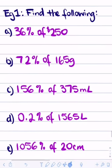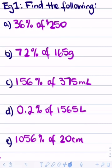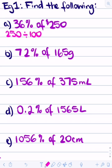Let's start by doing a few questions. If you think you know how to do it, pause the video and try it yourself and we'll go through the answers. The first question: what is 36% of $250? Using the unitary method, that's 250 divided by 100 times by 36. Putting that in the calculator gives us $90.